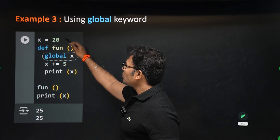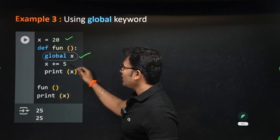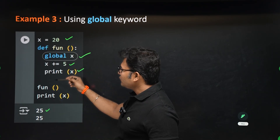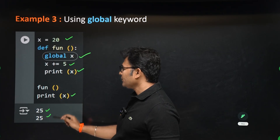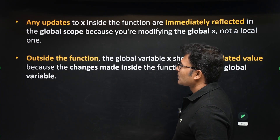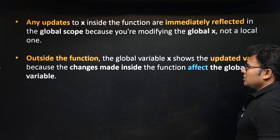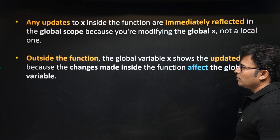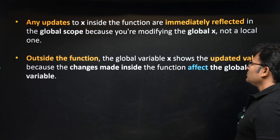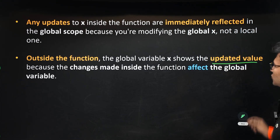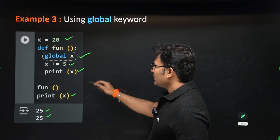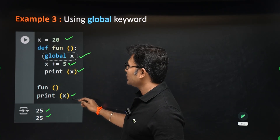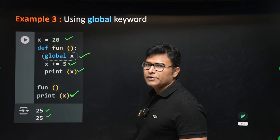So x = 20 is a global variable. We declare it as global inside the function and change it to 25. If you print the value of the global variable, it will show 25. Even if you come out of the function, it will still show 25 — the global variable is updated.